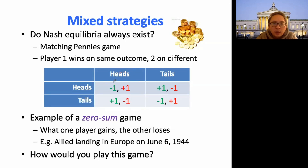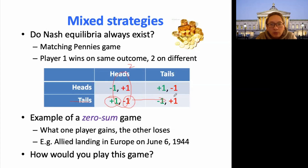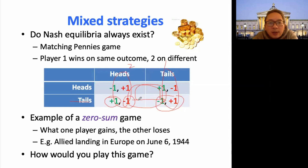In this Matching Pennies case, we're looking at whether there's a Nash equilibrium. Let's say hat-hat: suppose player two sticks to hats, player one will obviously choose tails because of the higher payoff. Looking at tail-hat — if player one sticks to this, player two is going to deviate from it. Player two moves, and then player one deviates again. So there's a circling around: no equilibrium in the pure strategy space.